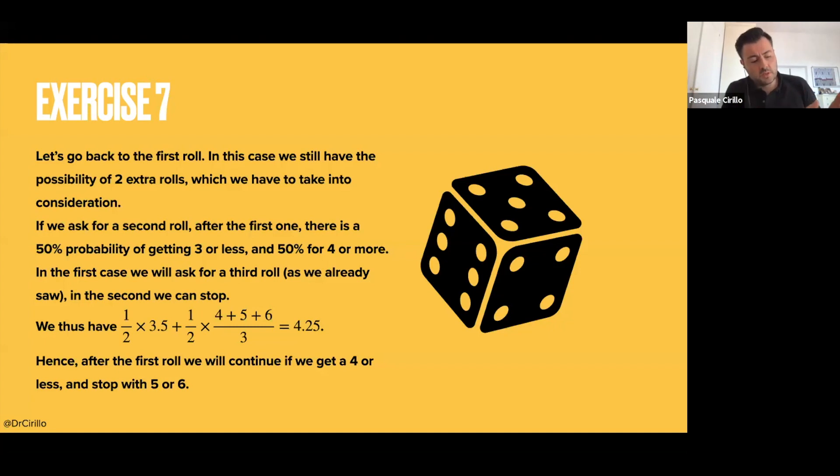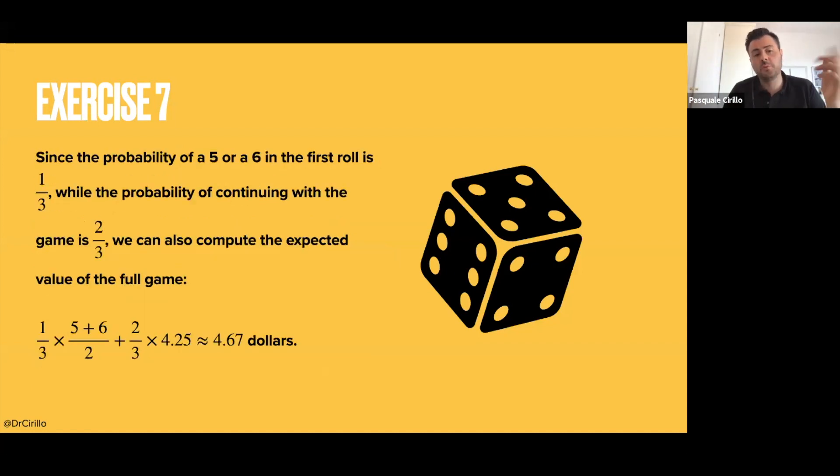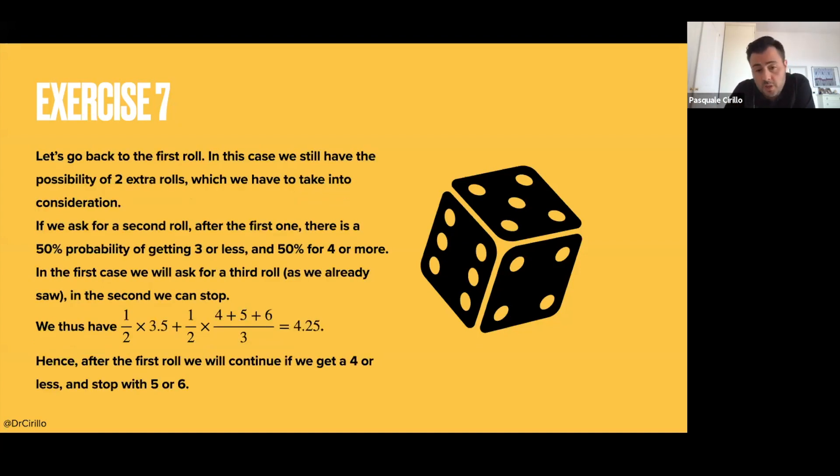So the first toss. The rule, your strategy will be always to compare the die with the expected return of the next tosses. In the first toss, that means that you have to score at least 5 or 6 to stop, otherwise you continue. In the second toss, you have to score at least 4 or more, otherwise you continue. So if you put everything together, what is the probability that you get 5 or 6 in the first toss? It's just 2 possibilities over 6, so it's 1/3. It's 1/3 times the expected return of getting a 5 or 6, plus 2/3, so the fact that you will continue, times the expected return of next two rolls that you have already computed, which is 4.25. So in principle, you have an expected return in this game of 4.67. In reality, we could have stopped here, because already here, we already had the strategy.